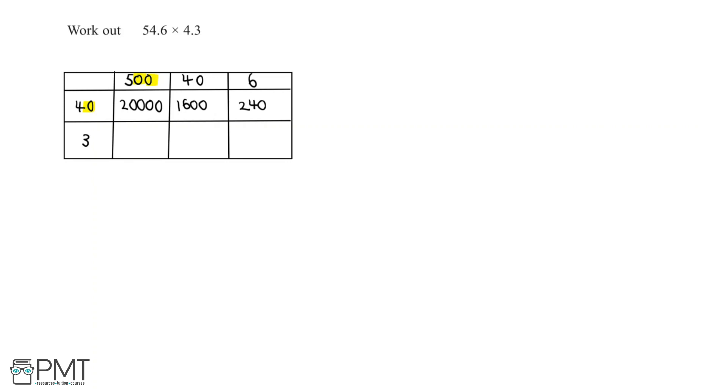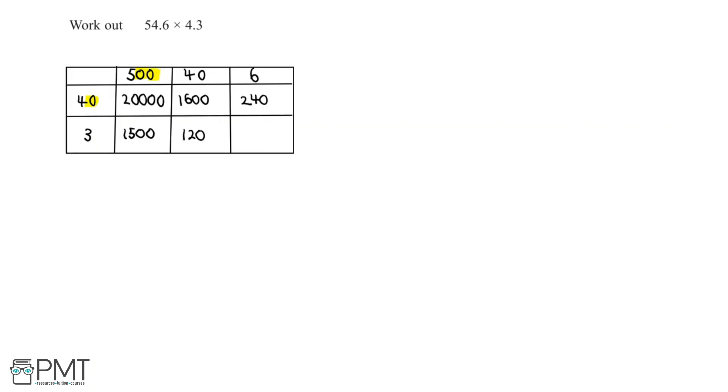Then 500 times 3, 5 times 3 is 15, plus the two zeros from the 500, and we end up with 1,500. 3 times 40, 3 times 4 is equal to 12, plus another zero, which is 120. And finally, we have 6 times 3, which is equal to 18.